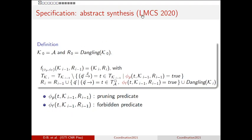This is the abstract synthesis algorithm first presented at Coordination 2019, also available in a journal version in Logical Methods in Computer Science. We generalize the standard algorithm for synthesizing the most permissive controller for supervisory control theory, which is a fixed-point computation where at each step we refine the transitions of the automaton and increase the number of forbidden states encountered during synthesis. In particular, we have a pruning predicate to decide when a transition has to be pruned, and a forbidden predicate to decide when a state is forbidden.